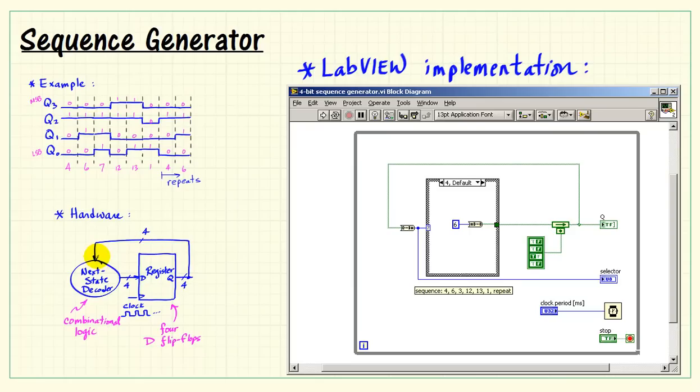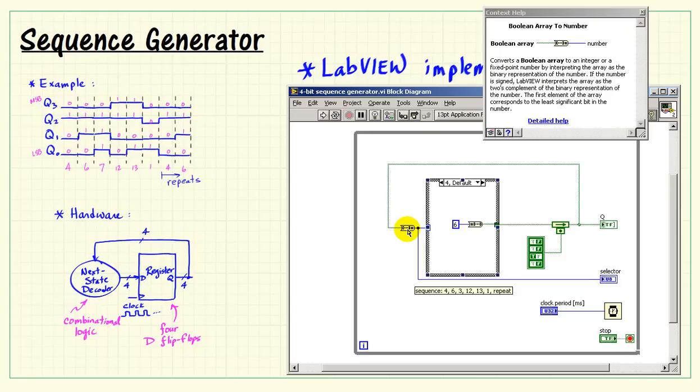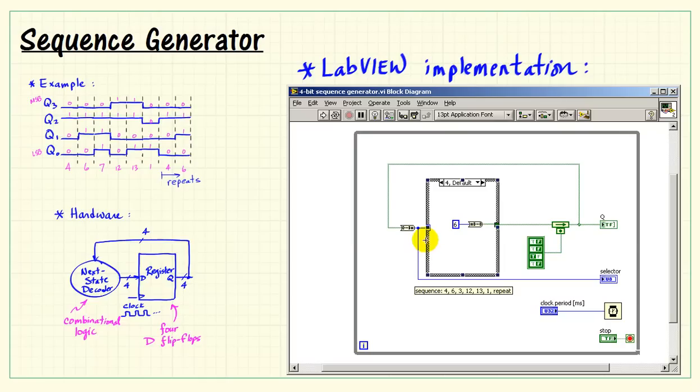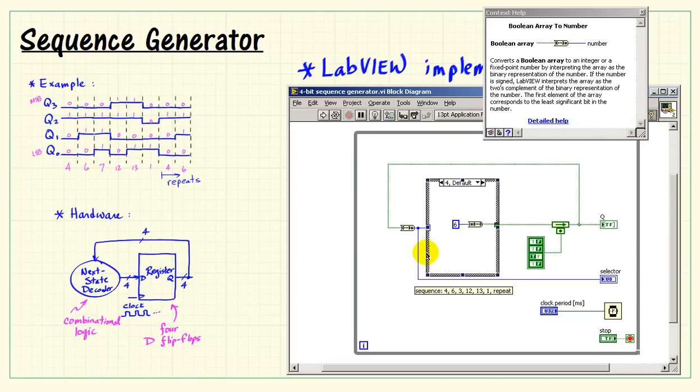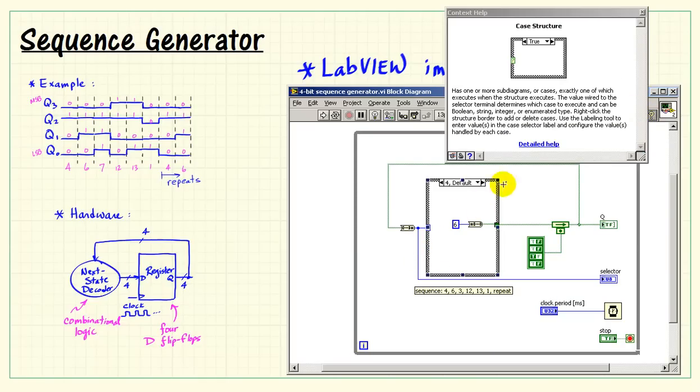Also note that I'm using the array style, so therefore this array can be thought of as a 4-bit bus. Let me turn on context help to illustrate some of these nodes here. Boolean array to number accepts the 4-bit array and produces a numerical interpretation of that. The numerical value then operates the selector terminal on the case structure.